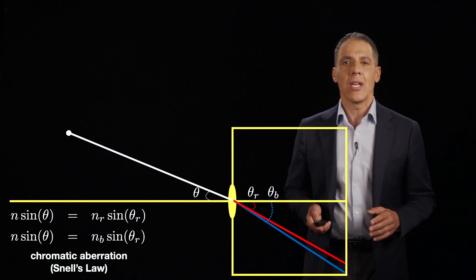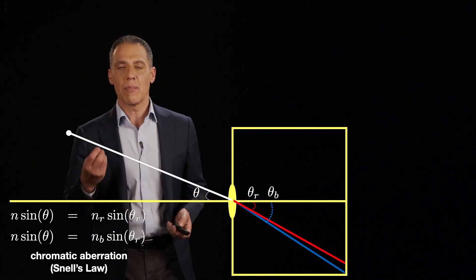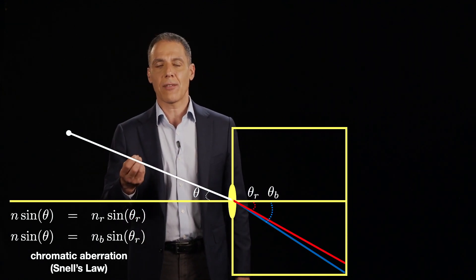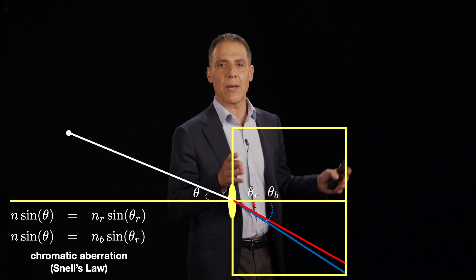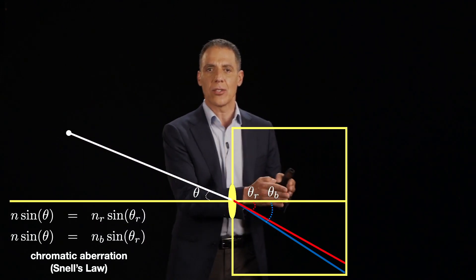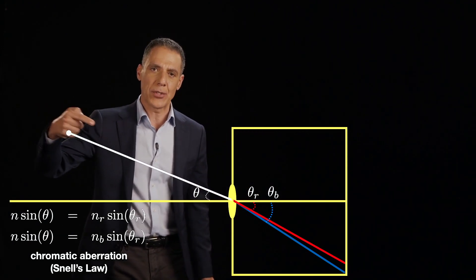We just have to come to live with it. So in particular, Snell's law says that light bends proportional to wavelength. So when we had this imaging camera before, we had our camera, we had our lens, we had our sensor.